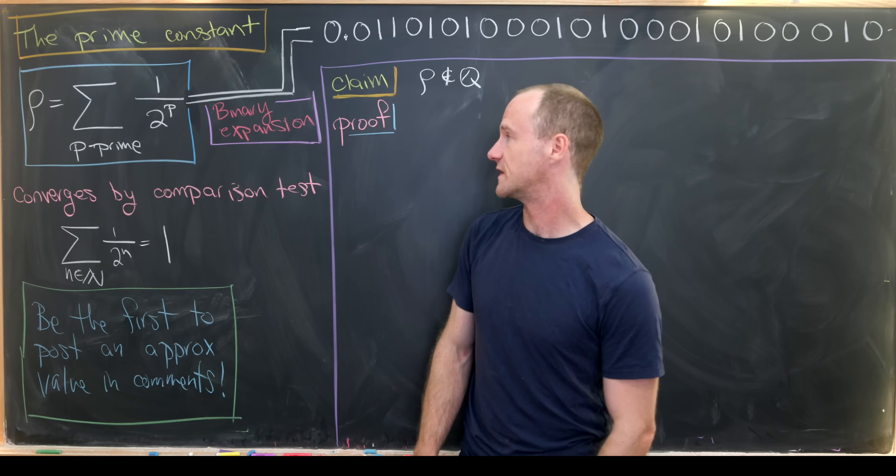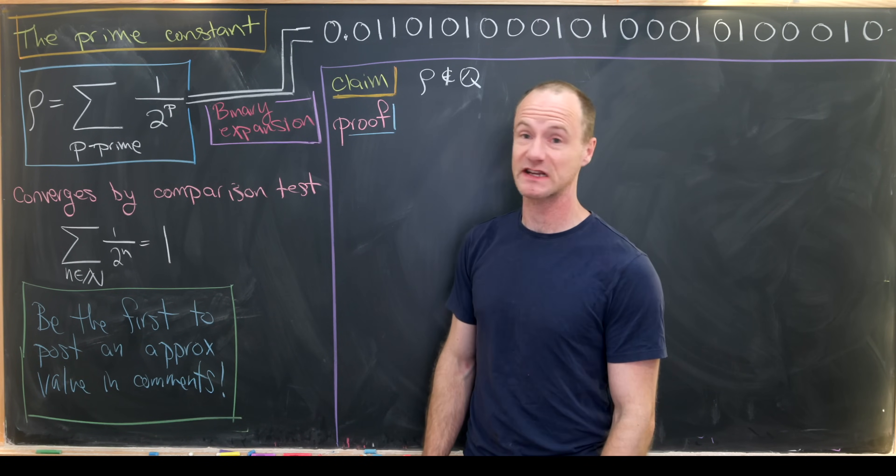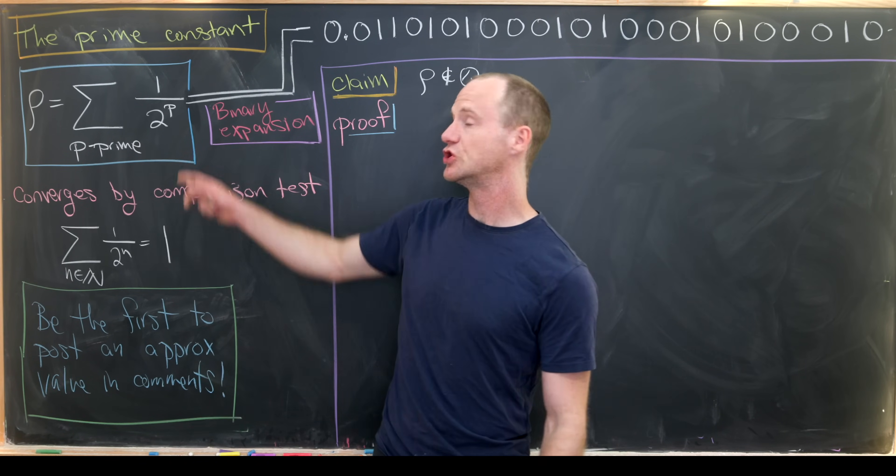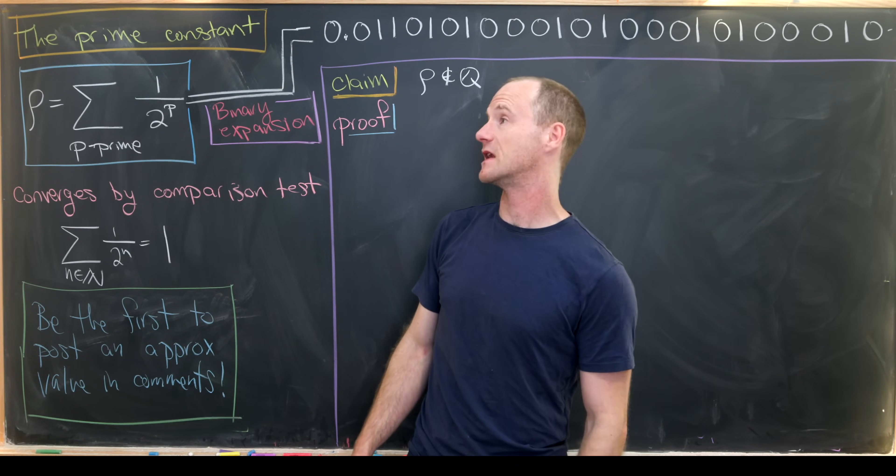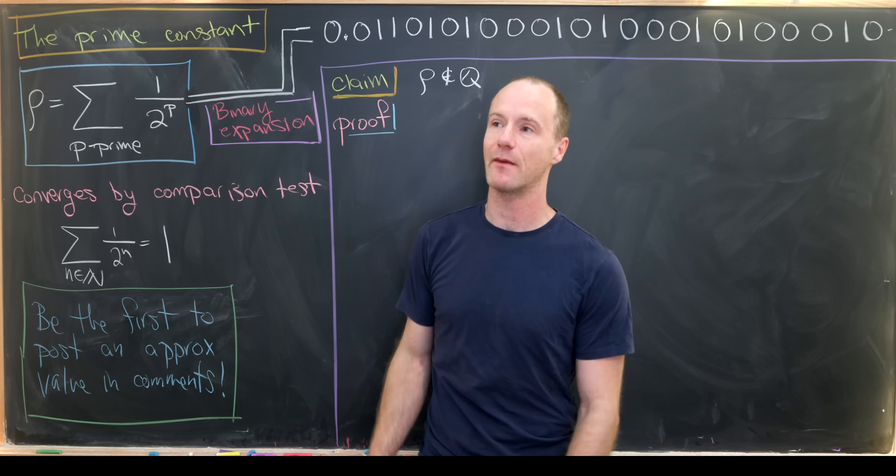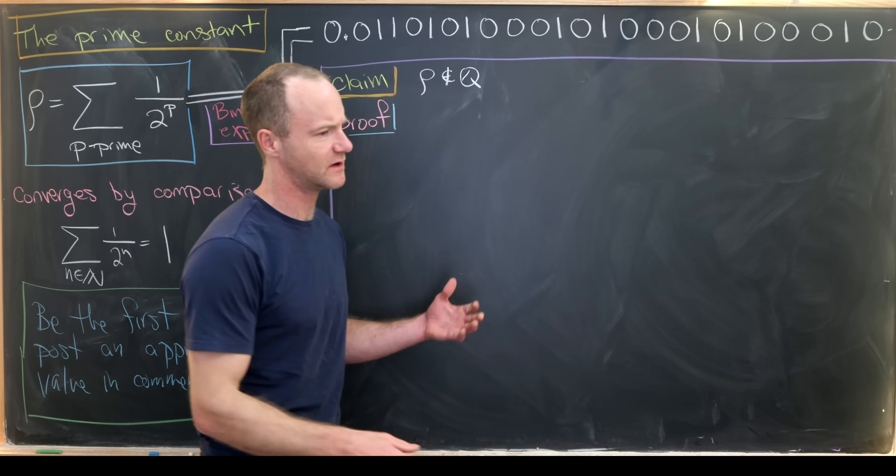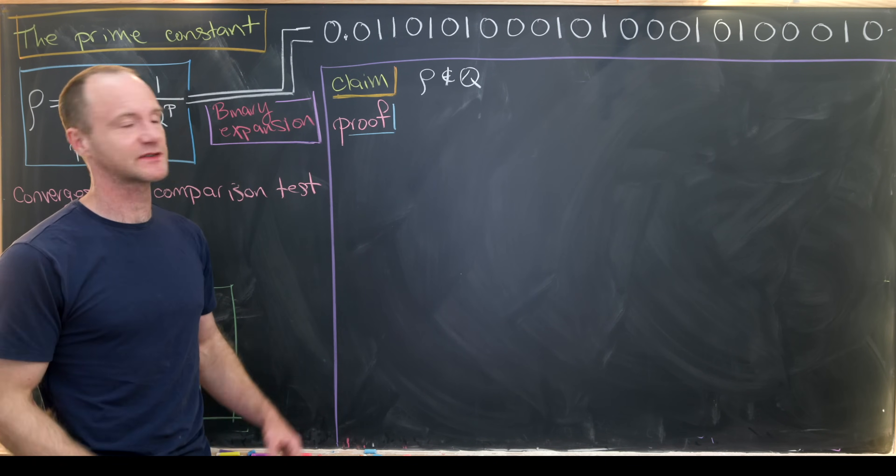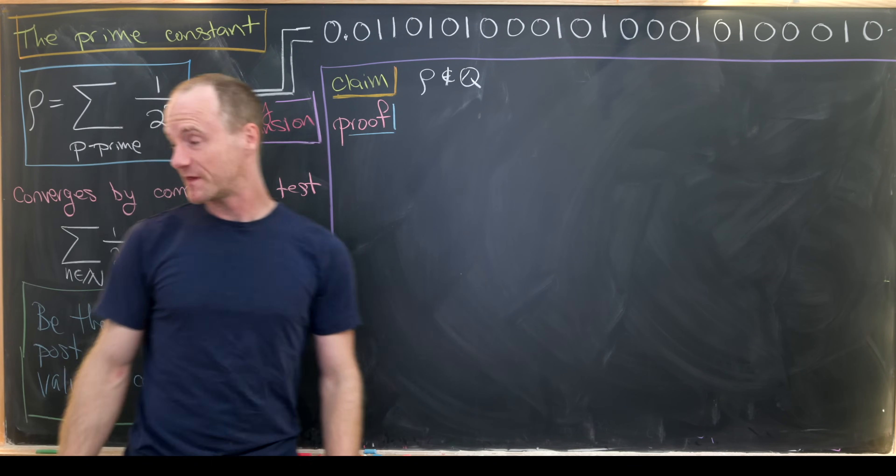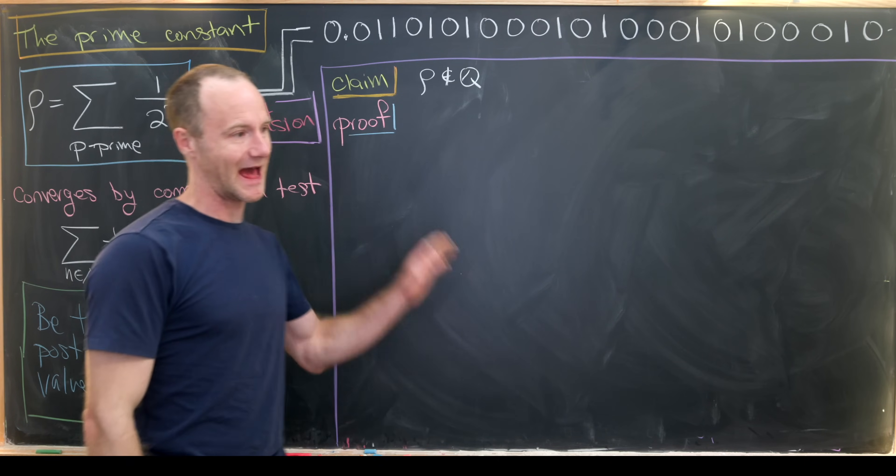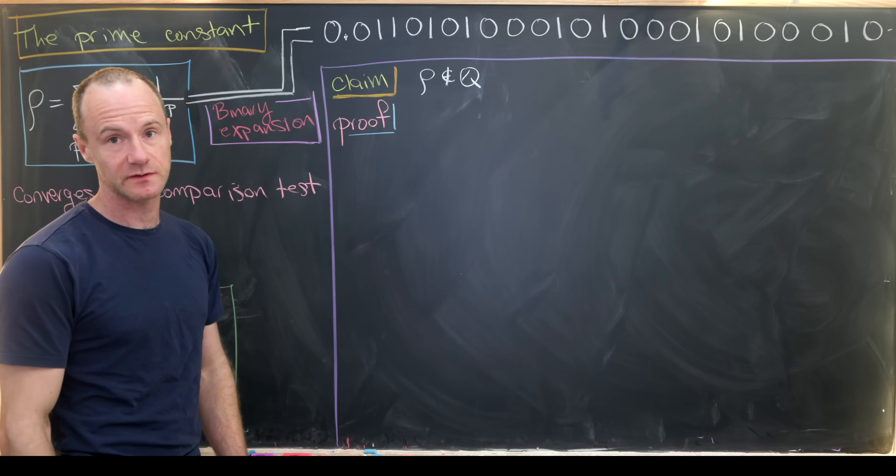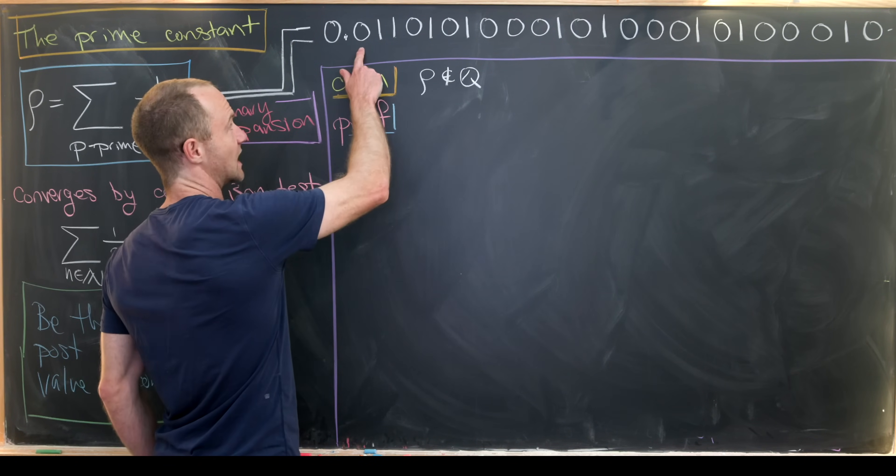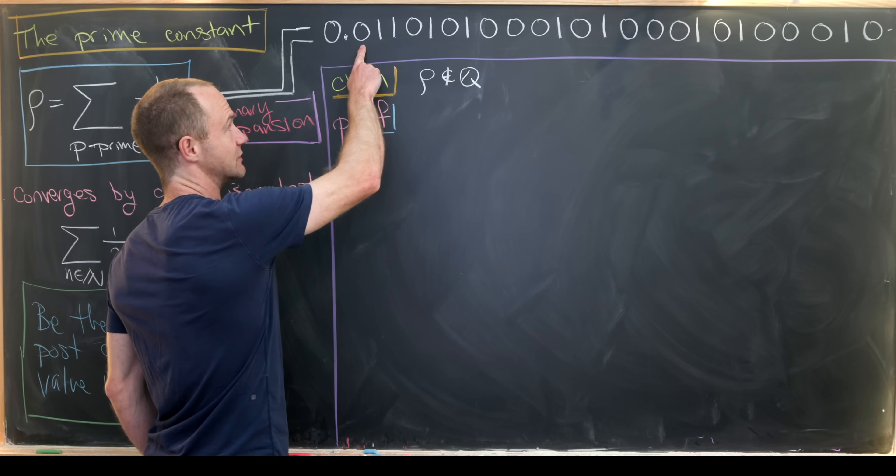Another interesting way to look at this is via its binary expansion. And since we've got our 2 in the denominator, that means in the binary expansion, everything is going to be happening to the right of the decimal point. But it's not really a decimal. Is this called a binary point in this case? I'm not really sure. And what this gives us is a 1 at every prime location.